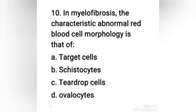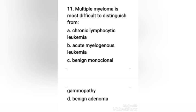Tenth question: in myelofibrosis, the characteristic abnormal red blood cell morphology is that of — target cells, schistocytes, teardrop cells, or ovalocytes? The right answer is option C, teardrop cells. The marked fibrosis, both medullary and extramedullary, accounts for the irreversible red cell morphological change to a teardrop shape. Red cells are sheared as they attempt to pass through the fibrotic tissue, resulting in teardrop cells.